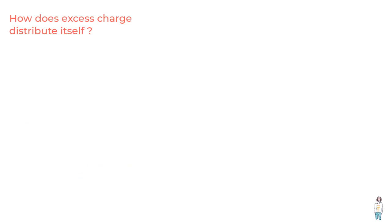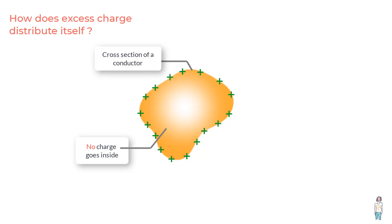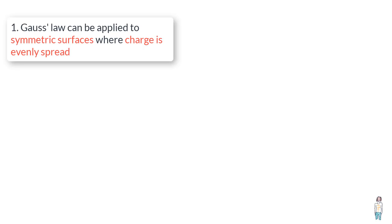Before we go ahead, let us remember one important aspect of excess charge placed on a conductor: if you place charge on a conductor, that may be a solid of any shape or even a sheet, the excess charge will spread itself on the surface of the conductor and no excess charge will go inside the solid material. The condition here is that the solid should be stationary and not moving.